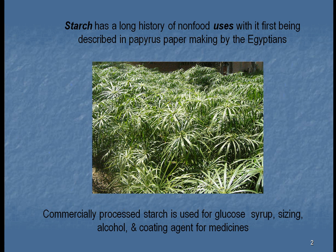Some of the earliest known uses besides food included papyrus. The Egyptians learned how to take papyrus and used the starches in it to make paper. We've all seen the manuscripts that are out there that still survive even to this day. Even today you can see Egyptians still making paper out of papyrus.